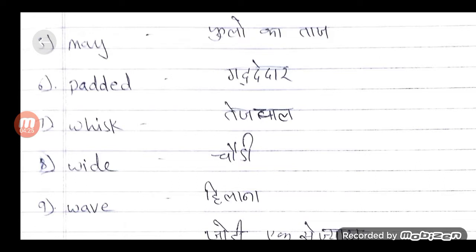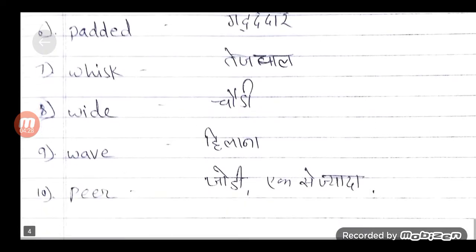Seventh में देखेंगे whisk — यानि तेज चाल. Eighth में देखेंगे wide — यानि चौड़ा. Ninth में देखेंगे wave — हिलाना. और tenth में देखेंगे pair — यानि जोड़ी, एक से ज़्यादा. तो यहाँ पर pair क्या दिखाया है — दोनों आँखें दिखाई थीं.